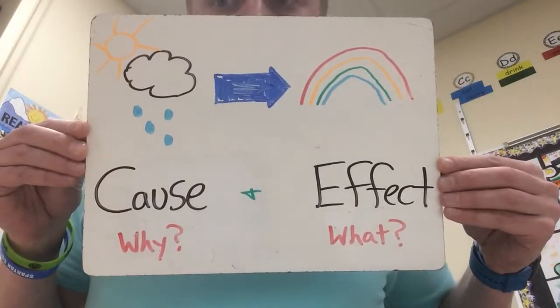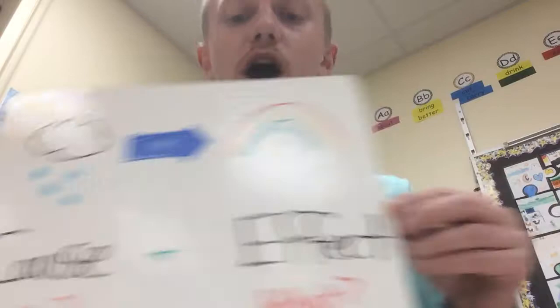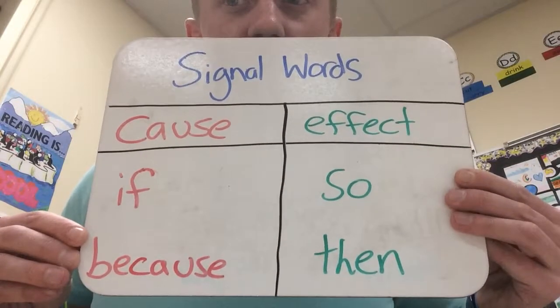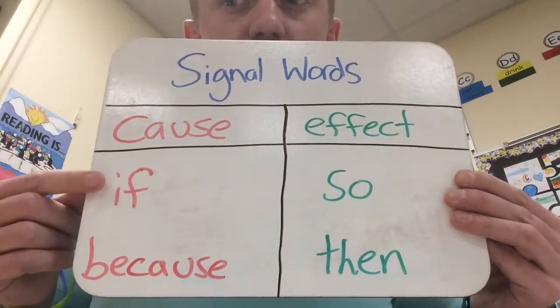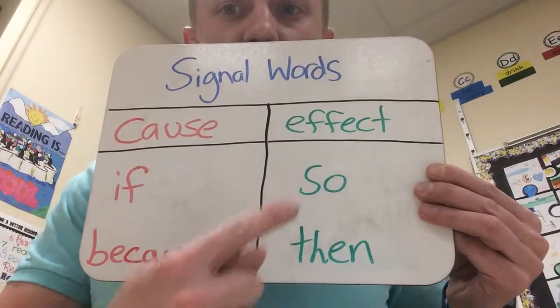We have, once again, our strategy of cause and effect. The effect is what happens, the cause is why that happens. Keep in mind those signal words we have for cause and effect. Signal words indicating a cause are 'if' and 'because,' and signal words for effect are 'so' and 'then.'